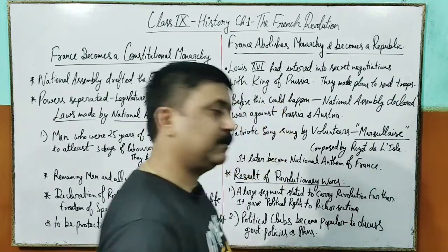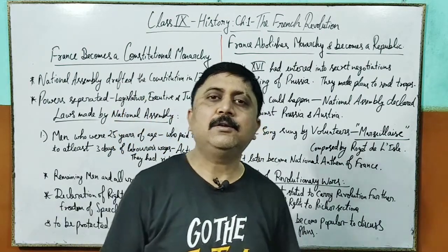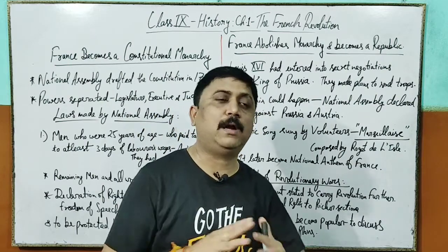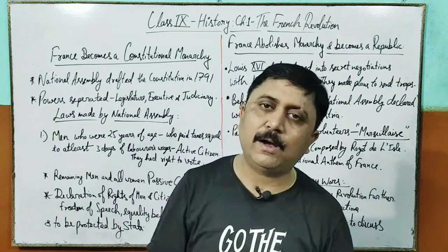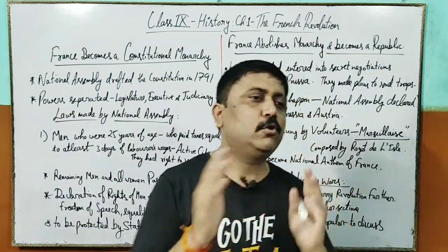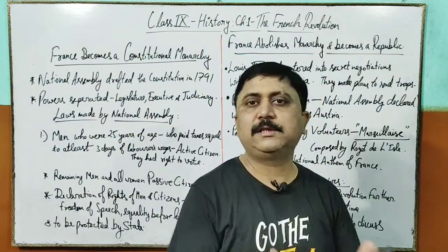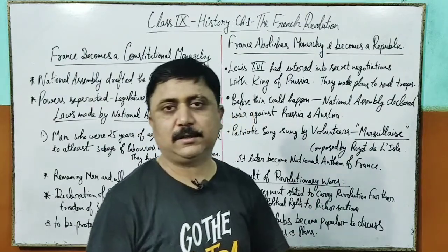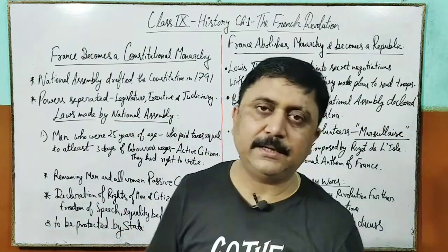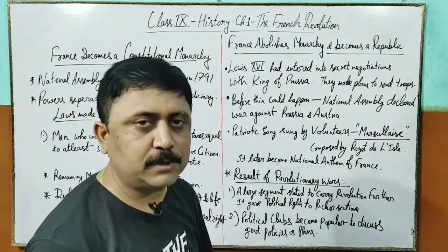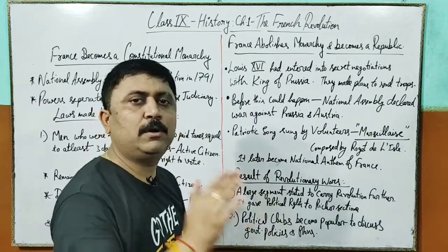Constitutional monarchy kya hoti hai - jab monarchy hoti hai to raja apne aap sarvesarva hota hai, supreme ruler hota hai. Constitutional monarchy means jab ruler constitution se governed ho - chahe monarch hai, king hi hoga, but he will be governed by constitution. Jo rules and regulations constitution mein drafted hain, uske hisaab se hi uske powers limitize hote hain. National Assembly ne 1791 tak ek naya constitution draft kar diya France ke liye - declaring France as a constitutional monarchy, not only monarchy. King hi ruler rahega, lekin samvidhan se badha hua rahega.